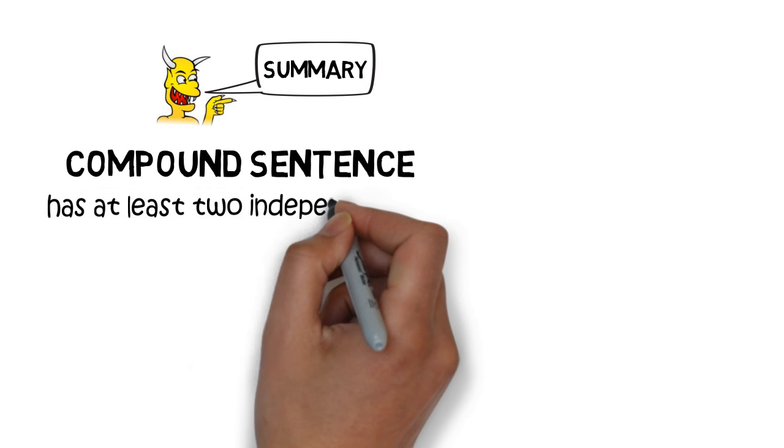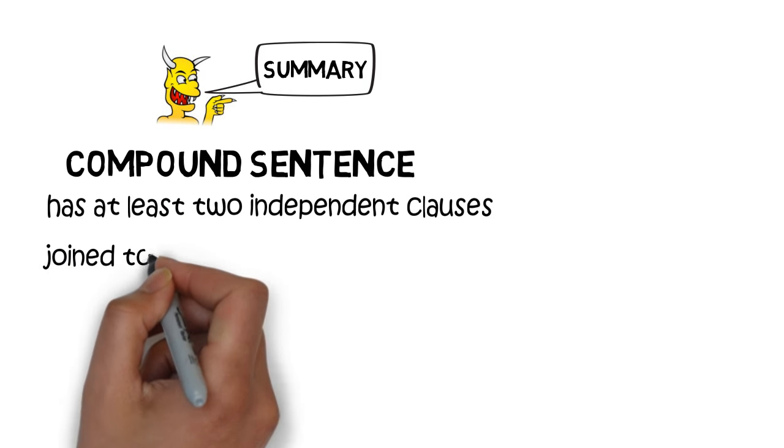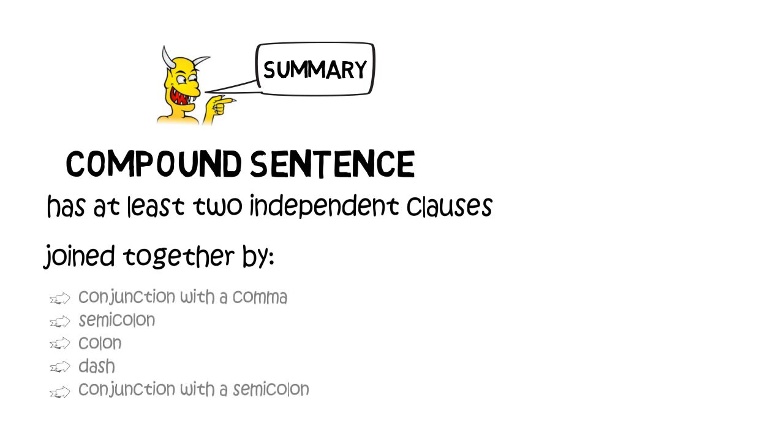So, quick summary. A compound sentence has at least two independent clauses, joined together by one of the following methods. A conjunction with a comma, that's really common. Semicolon, fairly common. Colon, quite rare. Dash, quite rare. Conjunction with a semicolon, very rare.